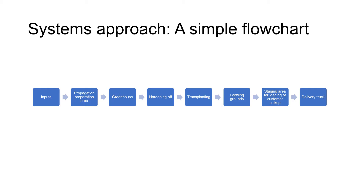A simple systems approach might start by identifying the main stages in our production process as shown in the very simple diagram here. Our systems approach starts by looking at all of our inputs and then at the nursery layout and the layout of individual work areas or departments and their production practices, and we're going to look at this diagram more closely in one of our labs.